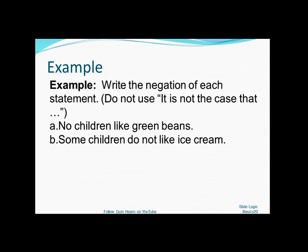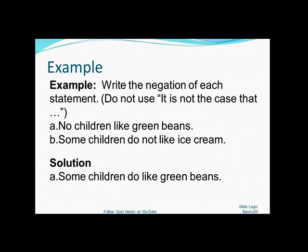So how would you write the negation of no children like green beans without using the catch all? It is not the case that no children like green beans. Since no is a universal quantifier, no children like green beans, we're going to, we know that we're going to use an existential. So the negation of that would be that some do like green beans.